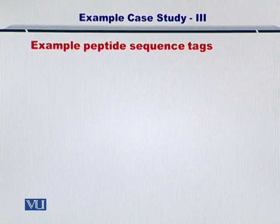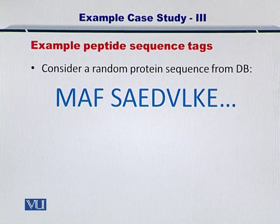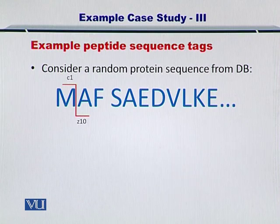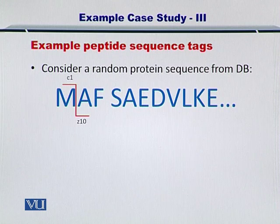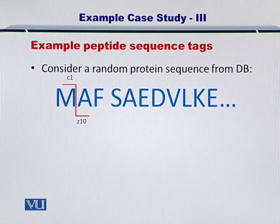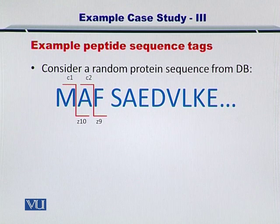This is what we are going to utilize in this example. Consider a random protein sequence from the database given here. If this protein were to be fragmented at the first site, it will leave only one amino acid with the N-terminus fragment and about nine amino acids on the C-terminus fragment. If another molecule of the same protein were to be fragmented at the second location, giving C2 and Z9, then you would have C2 and C1's mass reported by the mass spectrometer. So if you subtract the mass of C1 from C2, you will obtain the molecular weight of amino acid A — alanine.